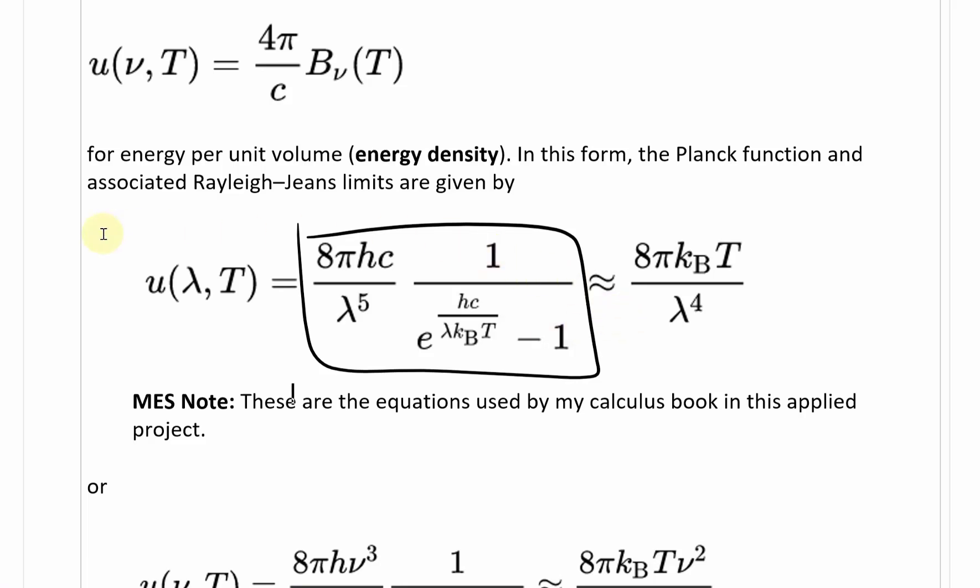And then the associated Rayleigh-Jeans limits, when you take the limit or approximation as we did, you get to this 8πKbT divided by λ⁴, which is exactly our function that we were given in the applied project. Let me just note, these are the equations used by my calculus book in this applied project, so we looked at energy density.